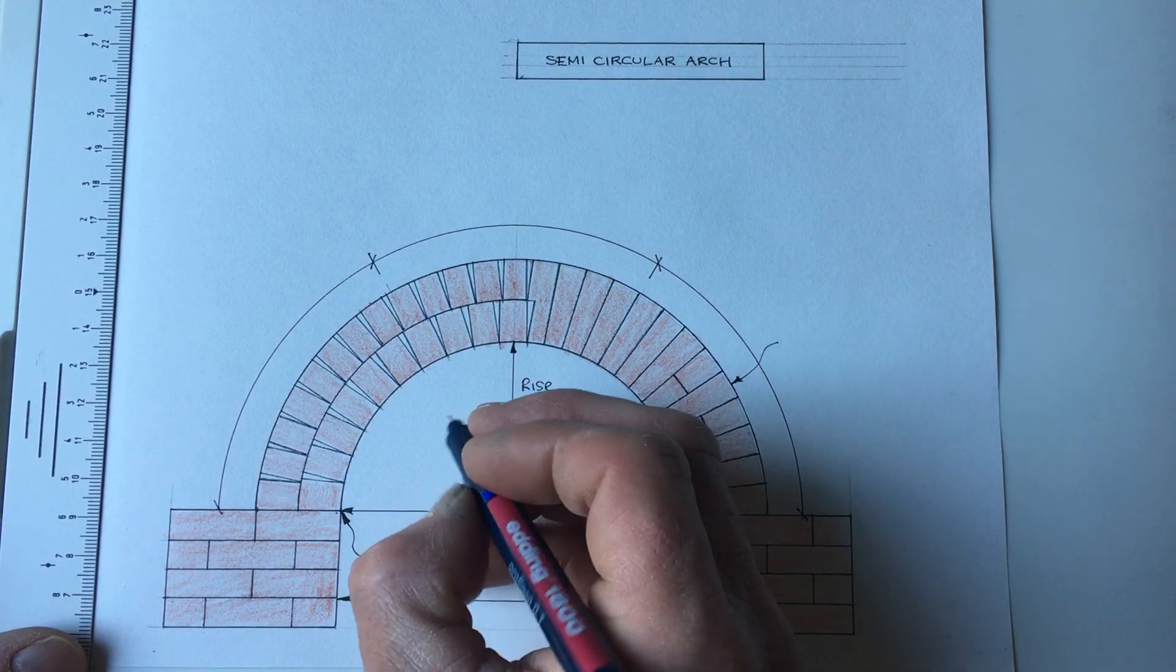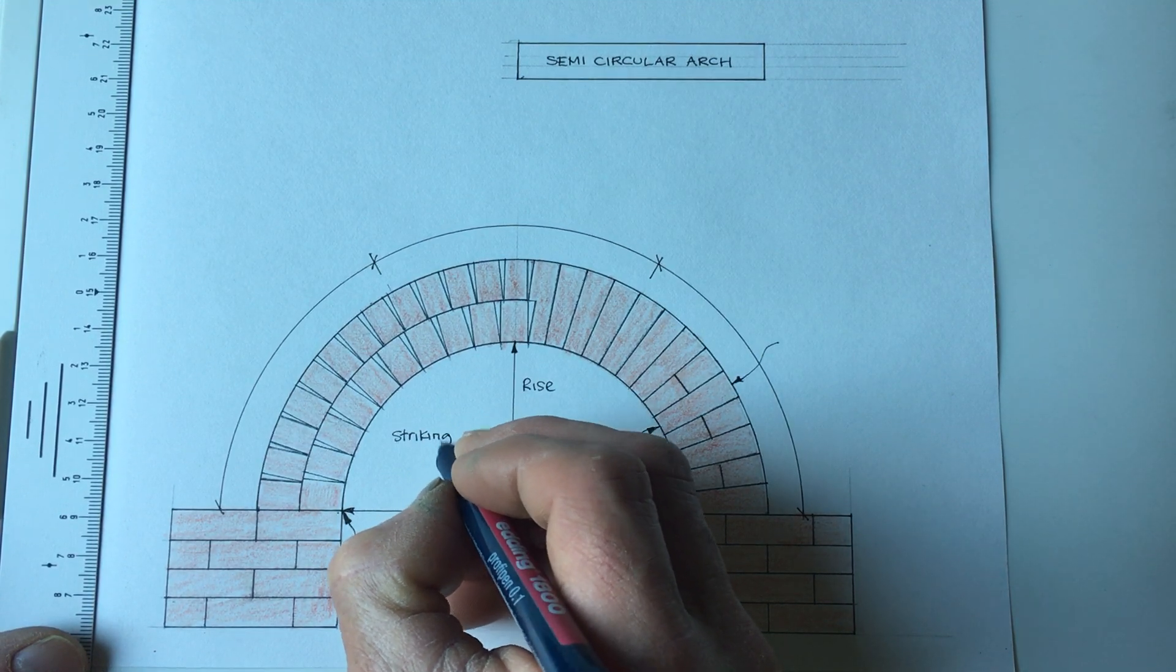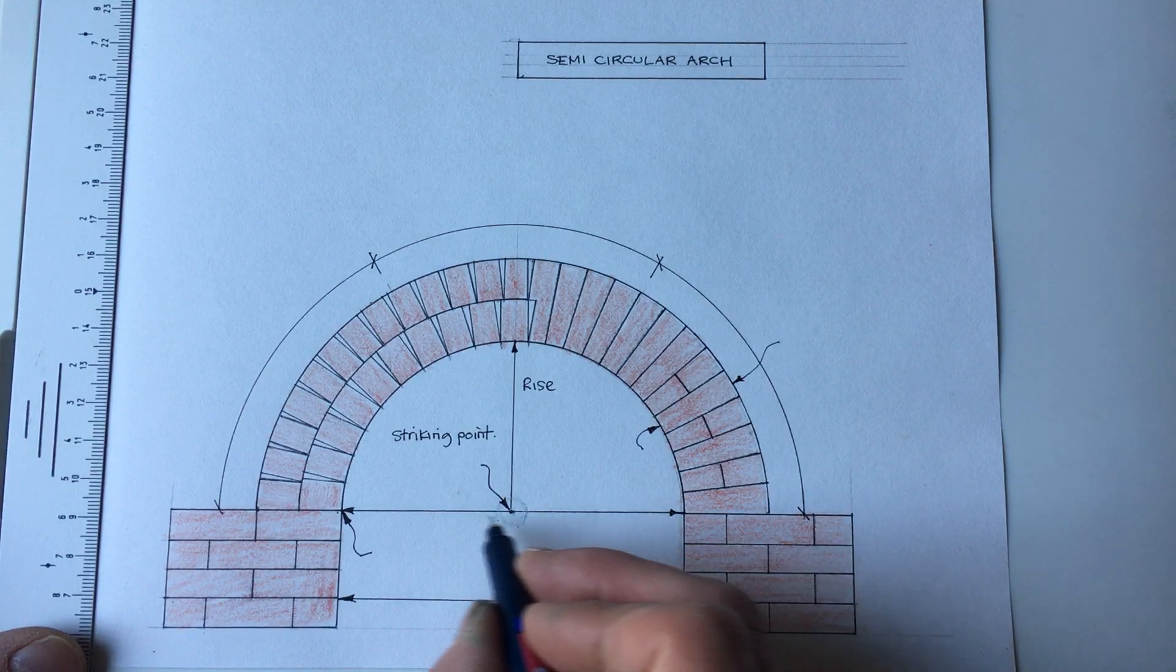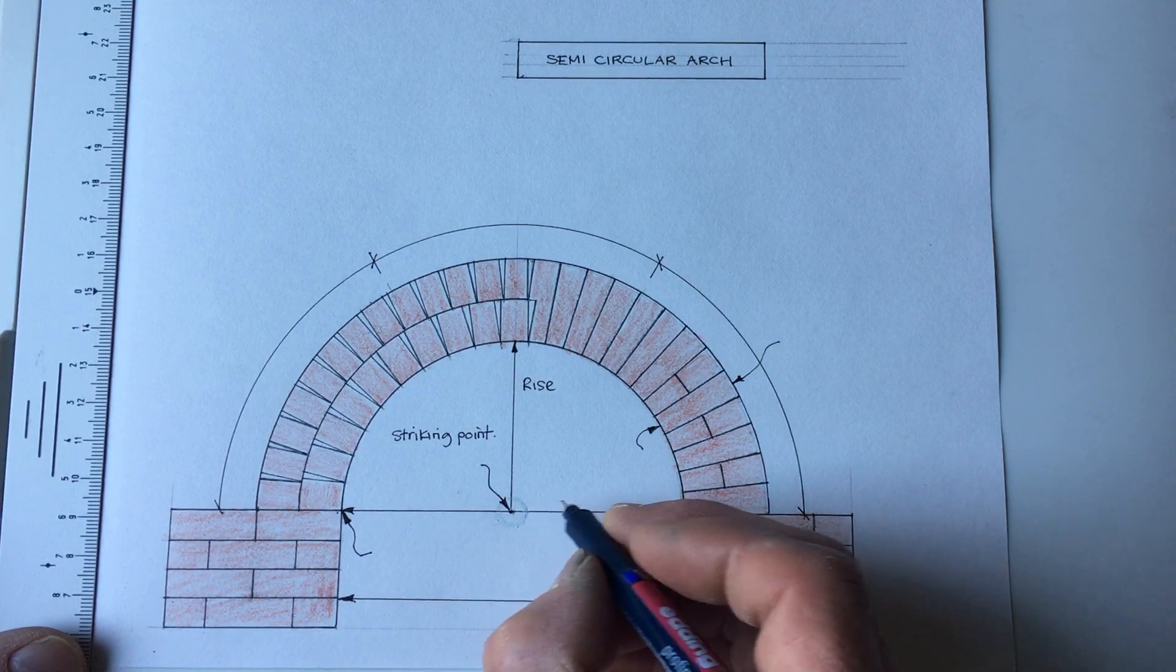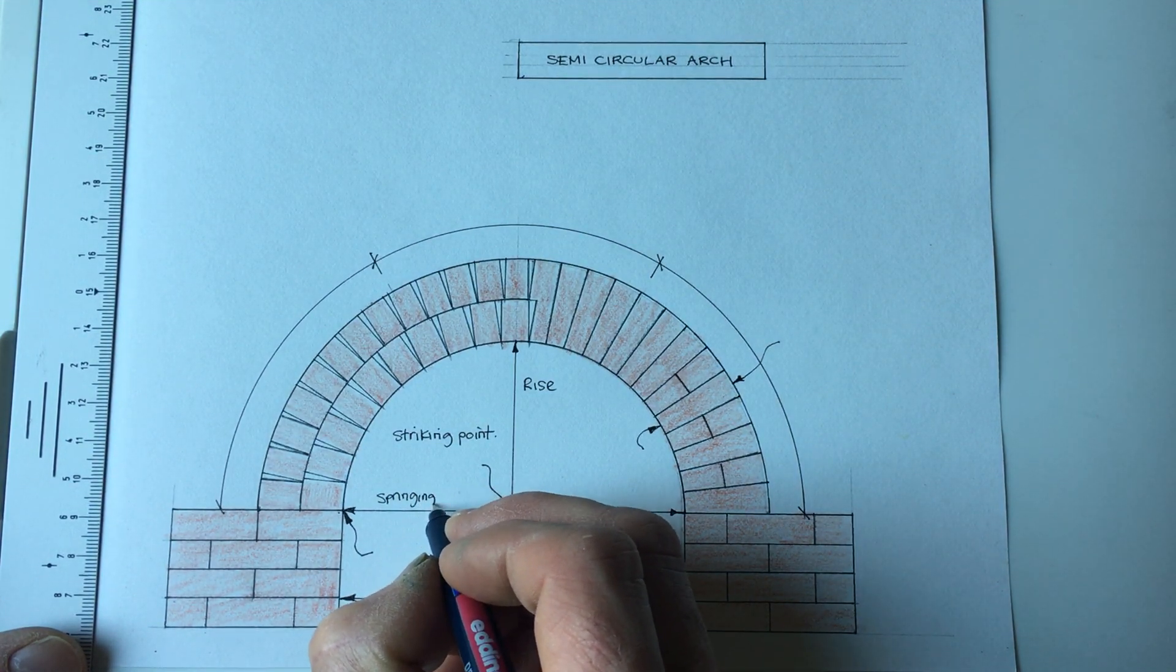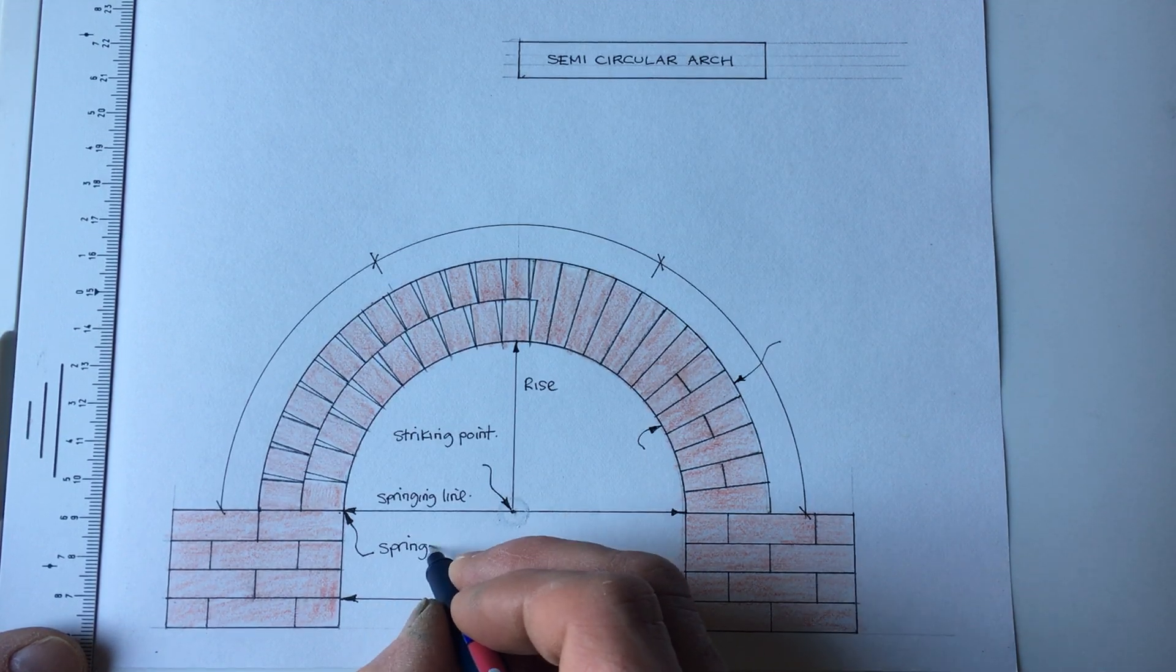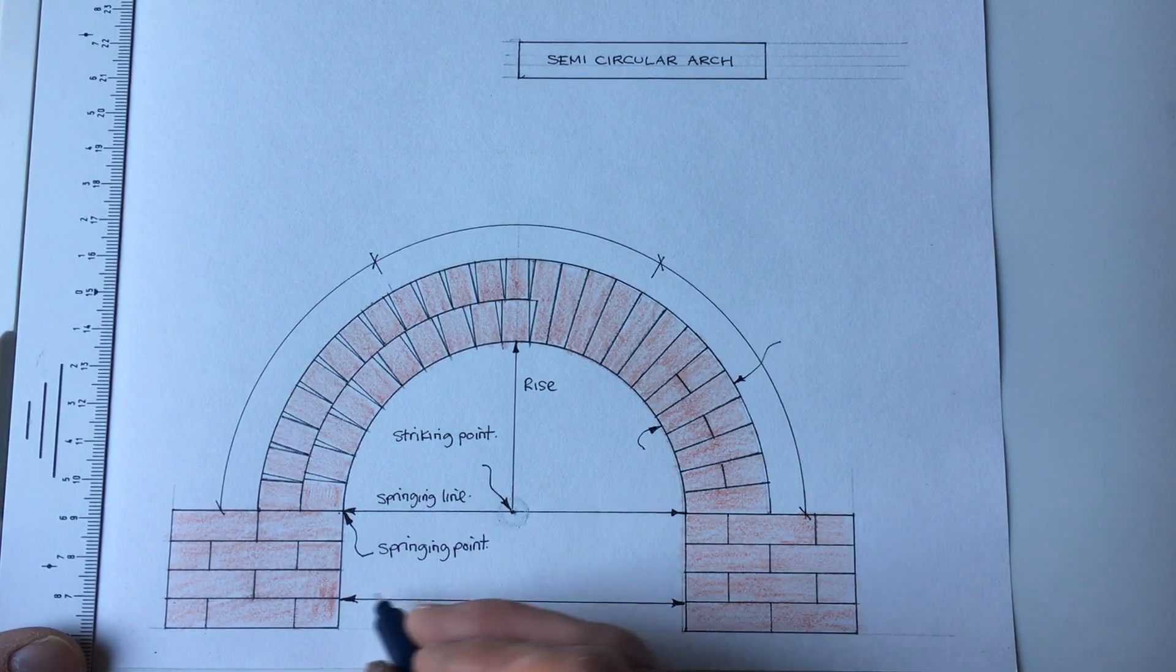So we have this striking point, not to be mistaken by here where we have what we call the springing line, because this is where the arch springs from. So this here is the springing line, and here is the springing point. The springing line is always the same distance as the span.